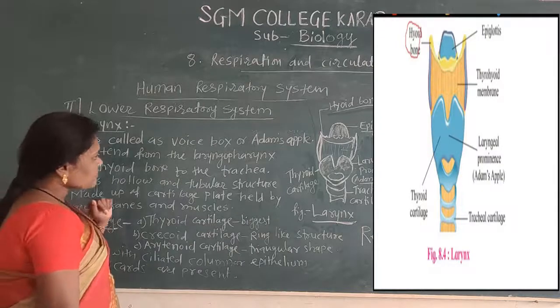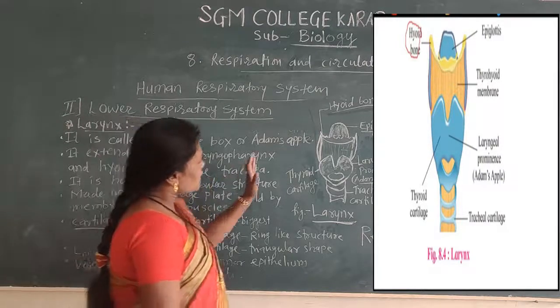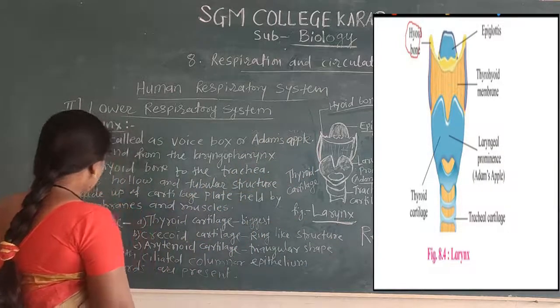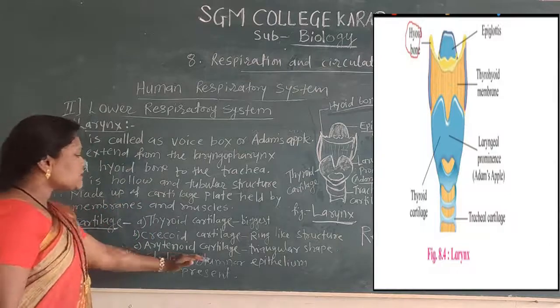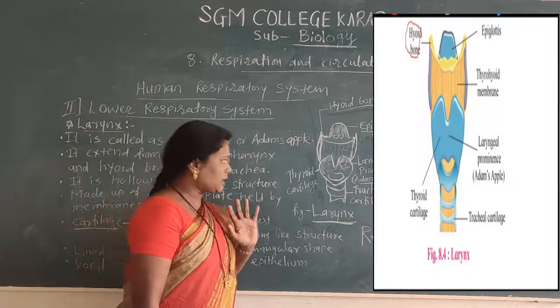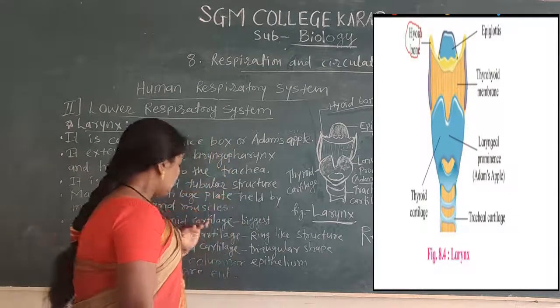Thyroid cartilage helps in the protection of the upper part of the larynx. Cricoid cartilage helps in protection of the lower side of the larynx. And the arytenoid cartilage helps in protection of the back side of the larynx. The larynx is lined with ciliated columnar epithelium.